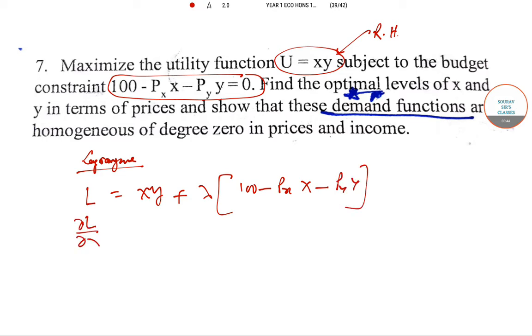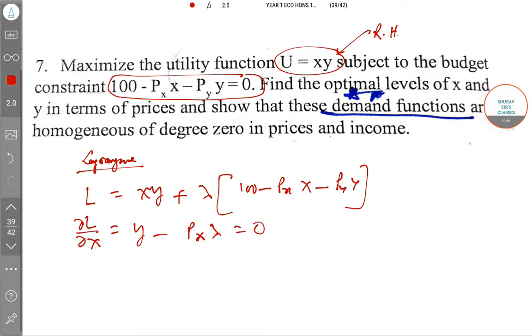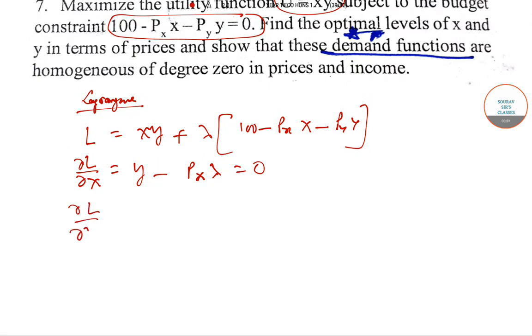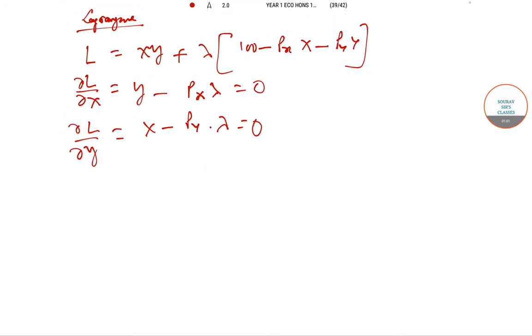So you go for the partial derivative ∂L/∂X: Y minus PX·lambda equals 0. And the second part is ∂L/∂Y: X minus PY·lambda equals 0. And in this case you will get Y/PX equals X/PY, just equating lambda from both of them.